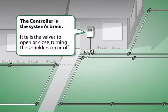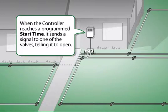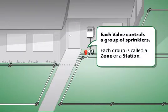The controller is the system's brain. It tells the valves to open or close, turning the sprinklers on or off. When the controller reaches a programmed start time, it sends a signal to one of the valves telling it to open. Each valve controls a group of sprinklers called a zone or station.